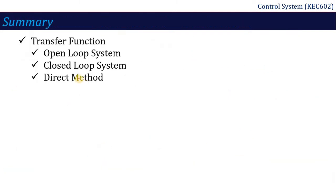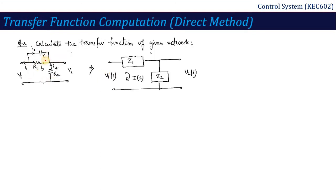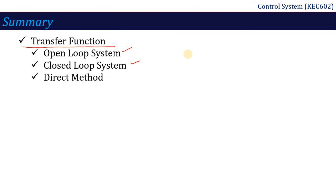So you have now learned how to calculate the transfer function for the open loop system, closed loop system, and using the direct approach for any given network. In the next lecture, I will take one or two more questions, and we will discuss how to calculate the transfer function when there are more than two branches — where this particular circuit formula cannot be applied. So let's stop here and meet in the next lecture. Thank you.